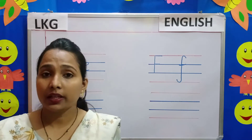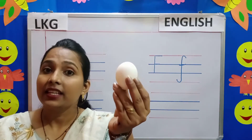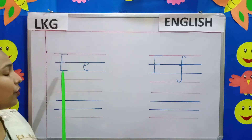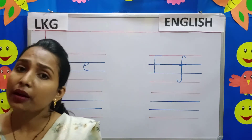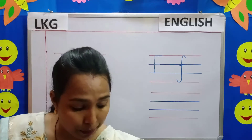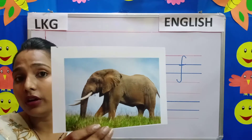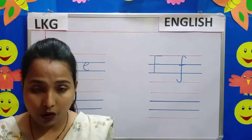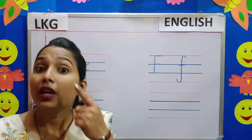Now children, tell me what is this? This is an egg. E for egg. Now there are many other words that begin with this letter. For example, E for elephant. Next we have E for eye.